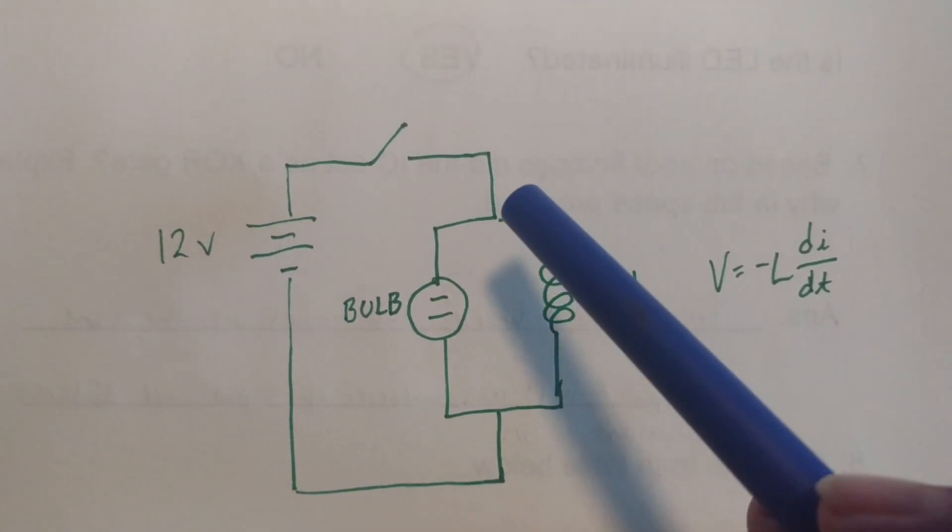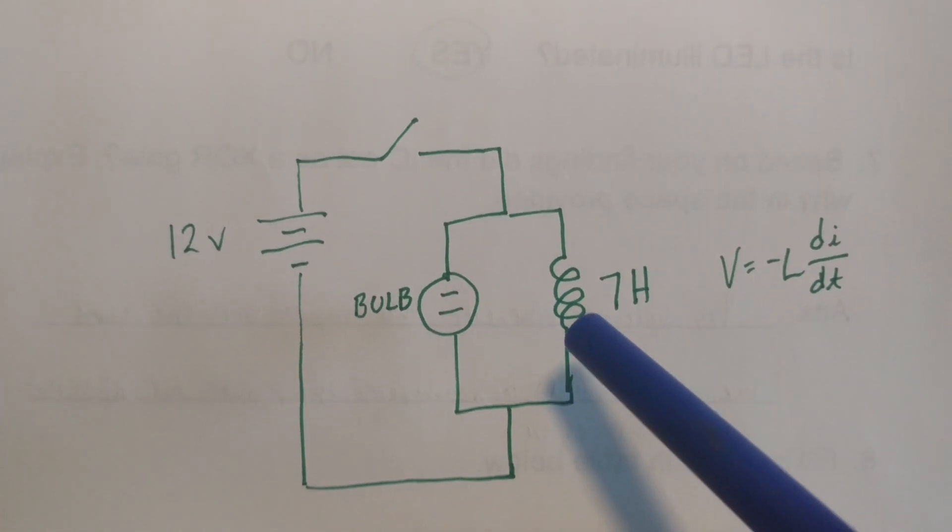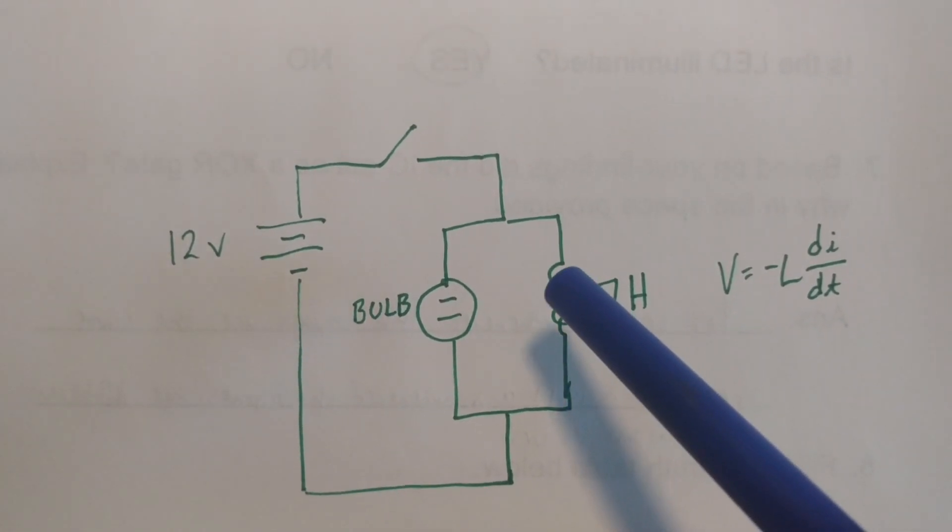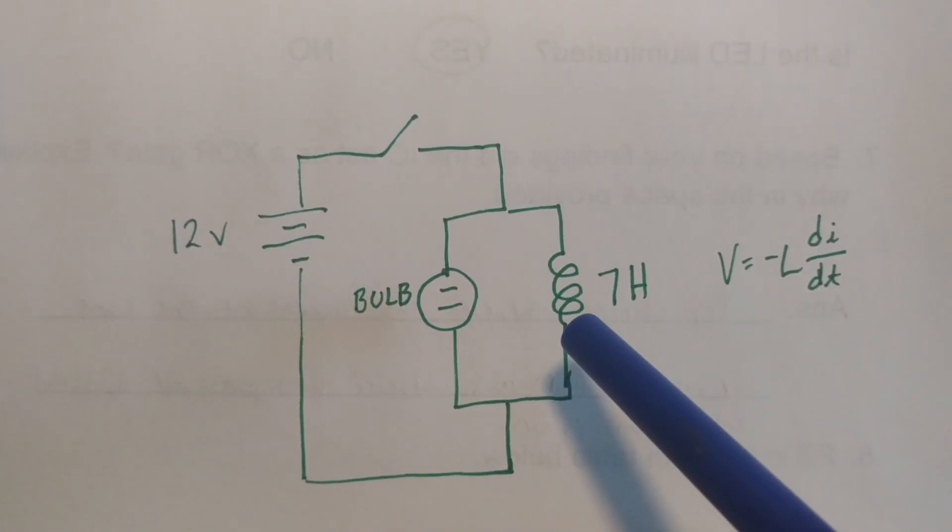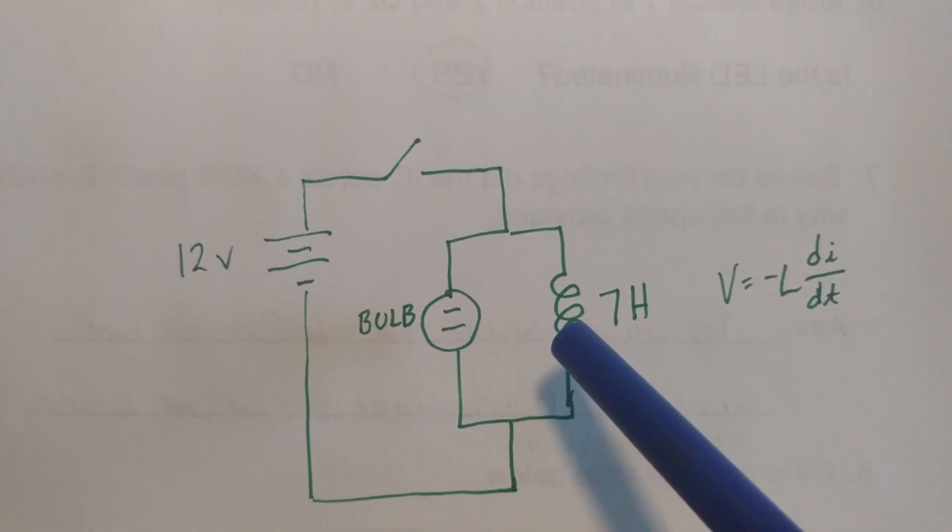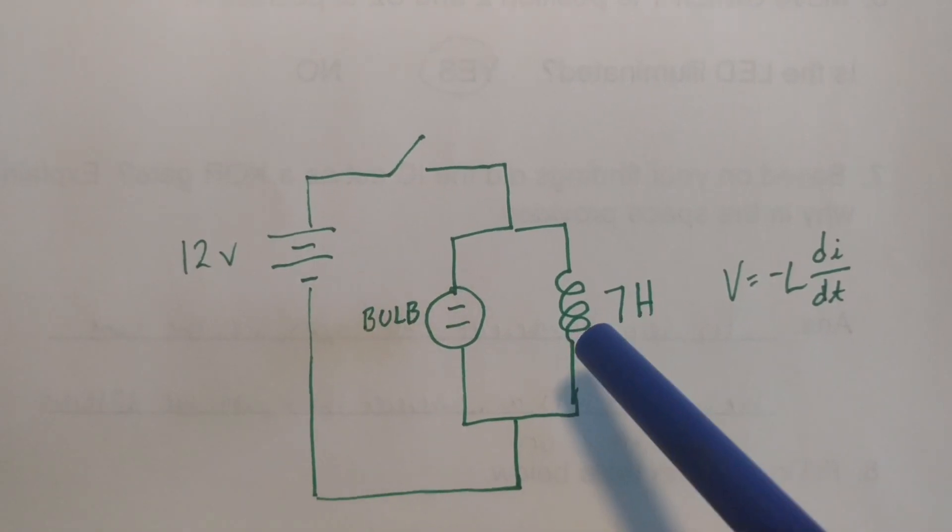So in this case what happens when the current flows through here it converts and stores it by converting it into an electromagnetic field. So once that reaches its maximum point it levels out.